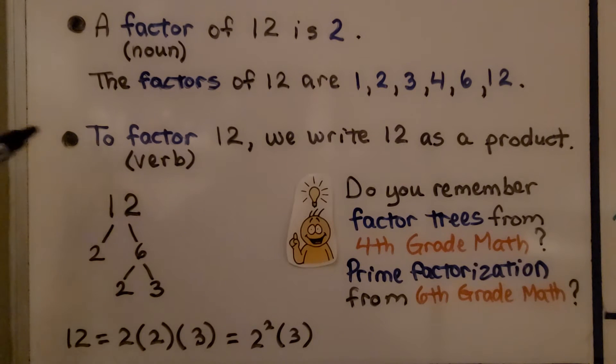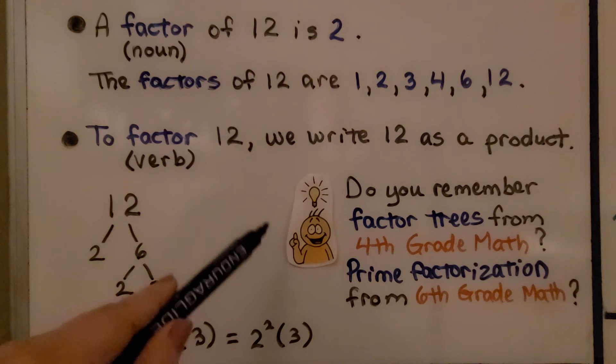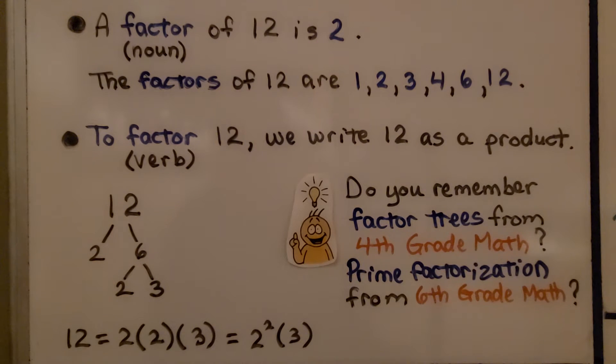To factor 12, we write 12 as a product. This way, it's a verb—we're doing something, we're factoring. So we have 12, and the factors are 2 and 6, and the factors of 6 are 2 and 3. Do you remember factor trees from 4th grade or prime factorization from 6th grade math? We have 12 equals 2 times 2 times 3, or 2² times 3.